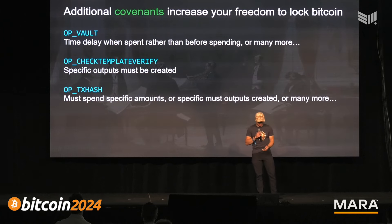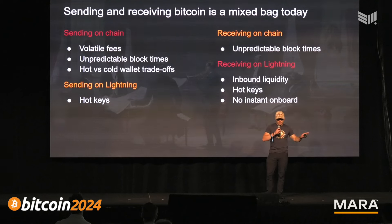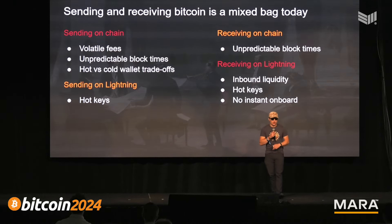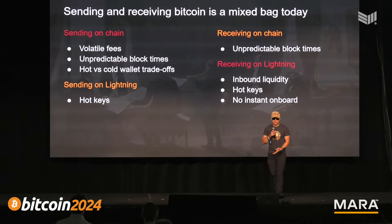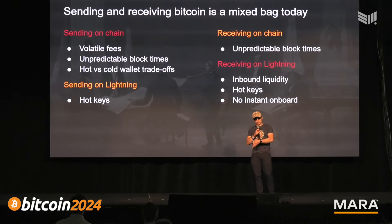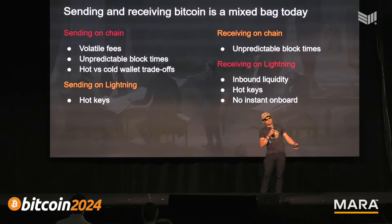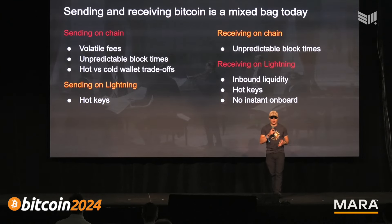Why are we talking about all of this? Sending and receiving Bitcoin is a mixed bag today. When I want to send some Bitcoin on-chain, I have to go to my node and mempool.space and maybe a few other places to see what the fees are like. I have to pick a fee rate, it might take an hour or two hours to confirm — especially if I'm cheap, which I am. Block times are unpredictable. I have to decide how much of my Bitcoin is in a hot wallet versus a cold wallet. Sending Bitcoin on-chain can be a pain.